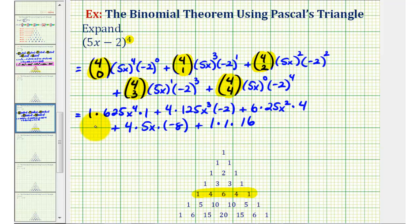So we'll simplify this one more time. We have 625x to the 4th. So the next term, we'd have 4 times 125 times negative 2, that's actually negative 1,000 times x to the 3rd, so we have minus 1,000x to the 3rd. Next, we have 6 times 25 times 4, that's 600 times x to the 2nd, so plus 600x to the 2nd.